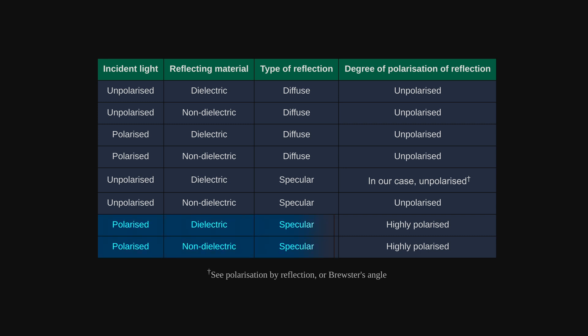Since we want our specular reflections to be polarized, our incident light needs to be polarized. That's what the polarizer film on our lamp does. If we left it out, the polarizer on our objective lens wouldn't really do much at all.